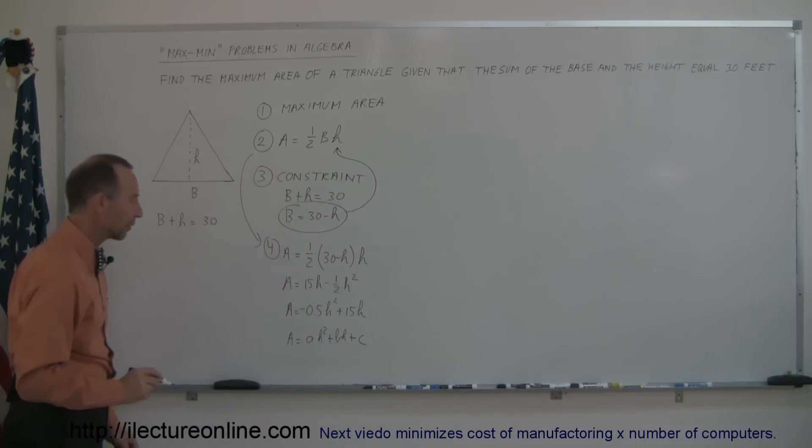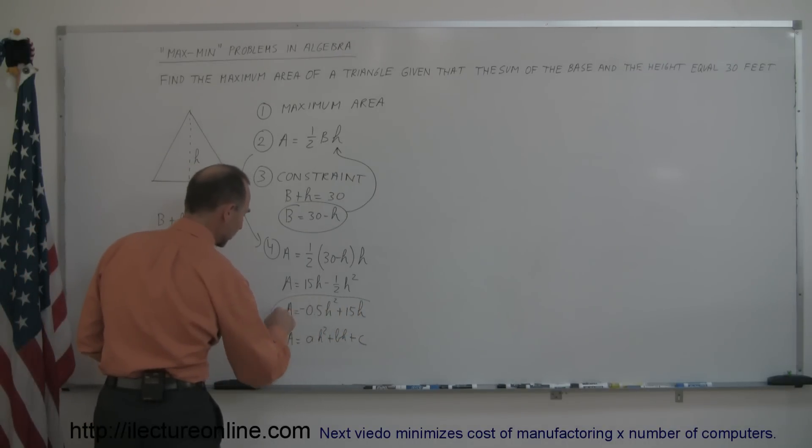And now if we're going to find the maximum or minimum area, in this case the maximum area, how do we do that? What's the technique here? Well, if I look at this equation, this is the quadratic equation, and I notice that the first term, the square term is negative.